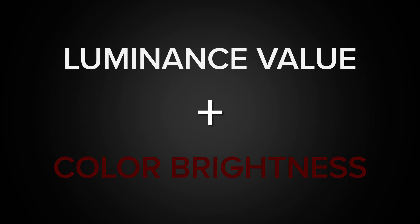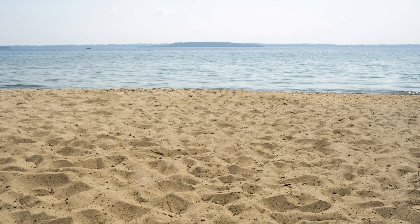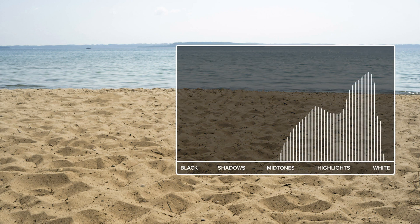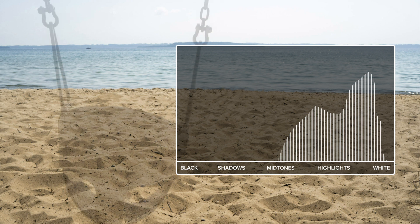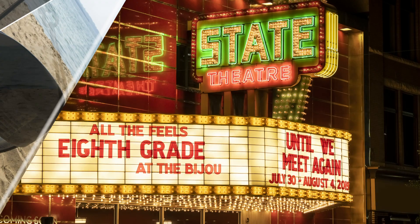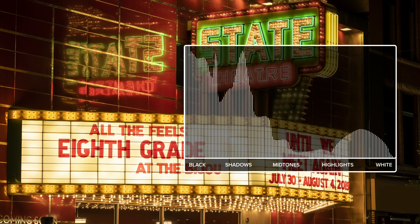Let's take for example this image. It's exposed correctly, but there are no dark tones in the image, so the histogram is pushed over to the right. If we brought in a dark tone, such as this swing, we see a bump on the left-hand side emerge. The same can be said of an image taken at night — the histogram spikes to the left, but it is clearly exposed properly.